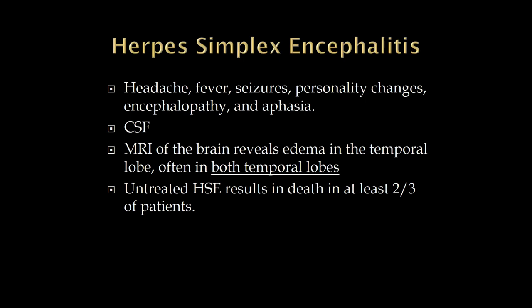Herpes simplex encephalitis tends to involve the temporal lobes. The uncus is the most epileptic part of the brain, so frequently these patients have seizures. Important limbic structures like the parahippocampal gyrus are in the temporal lobe, so there are often personality changes and confusion. The temporal lobe also contains the most important part of Wernicke's area, so patients often have a language problem — an aphasia. This tends to come on rather abruptly, and usually within hours or a day the patient is in the emergency room.